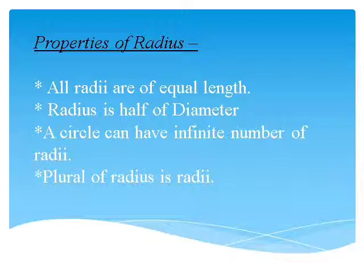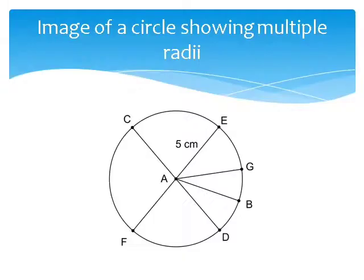Now in this you can see an image where there are multiple radii starting from the center A. AE, AG, AB, AD, AF and AC.